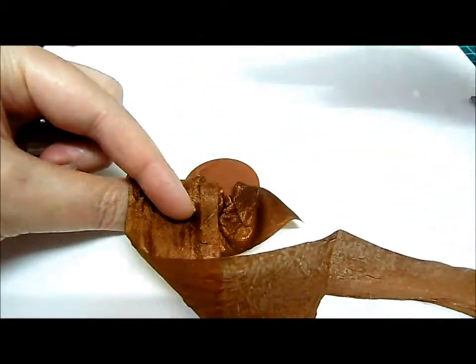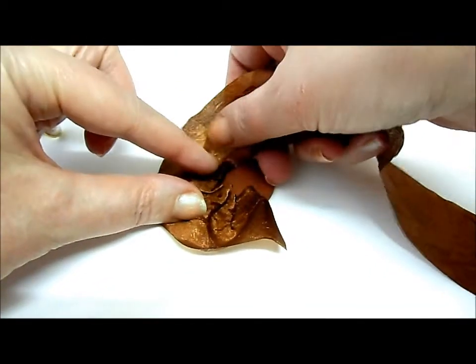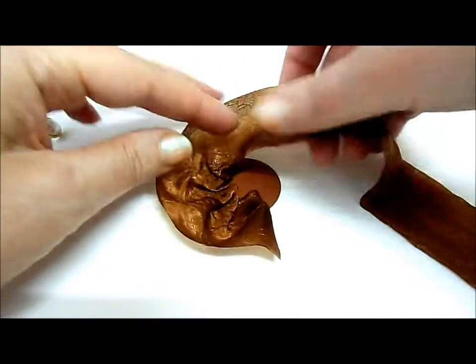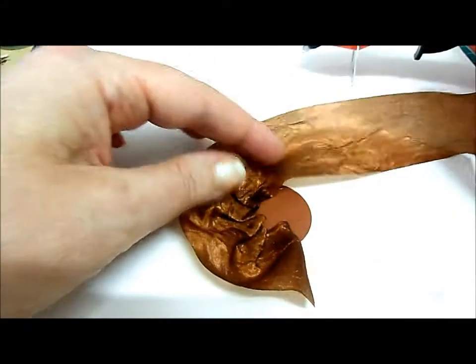And I'll just work all the way around it. And another dot behind. And catch that down again. So you can see it's starting to pleat all the way around. It's just gathering it.